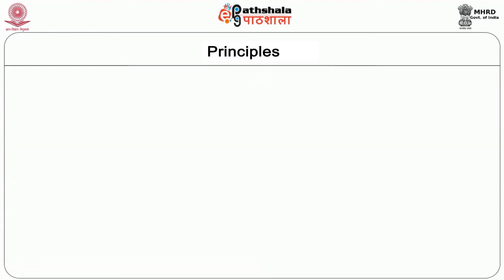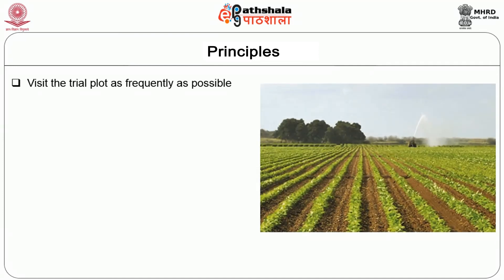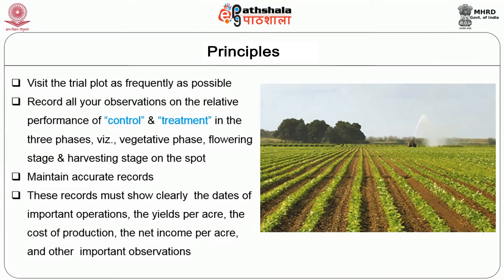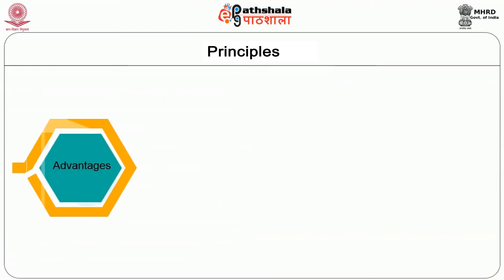All operations must be done under the personal supervision of the extension worker. Visit the trial plot as frequently as possible and record all observations on the relative performance of control and treatment in the three phases — the vegetative phase, flowering phase, and harvesting stage. Such plots can be carried out on any technology proven successful in a research station. Maintain accurate records clearly indicating dates of important operations, yields per acre, cost of production, net income per acre, and other important observations.